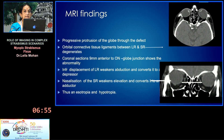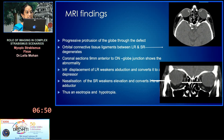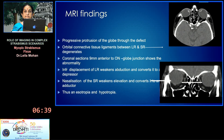After this MRI, the treatment modality changed completely. Coming to the MRI findings, there is progressive protrusion of the globe through this defect as the orbital connective tissue ligaments between the lateral rectus and superior rectus degenerate and thin out.